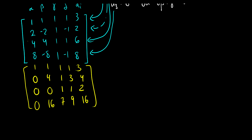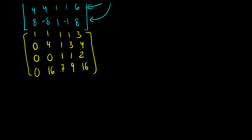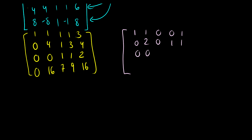Now subtract row 3 from row 1: [1, 1, 0, 0 | 1]. Subtract row 3 from row 2: [0, 4, 0, 2 | 2], then divide by 2 to get [0, 2, 0, 1 | 1]. Leave row 3 the same. For row 4, subtract 7 times row 3: [0, 16, 0, 2 | 2], then divide by 2 to get [0, 8, 0, 1 | 1].